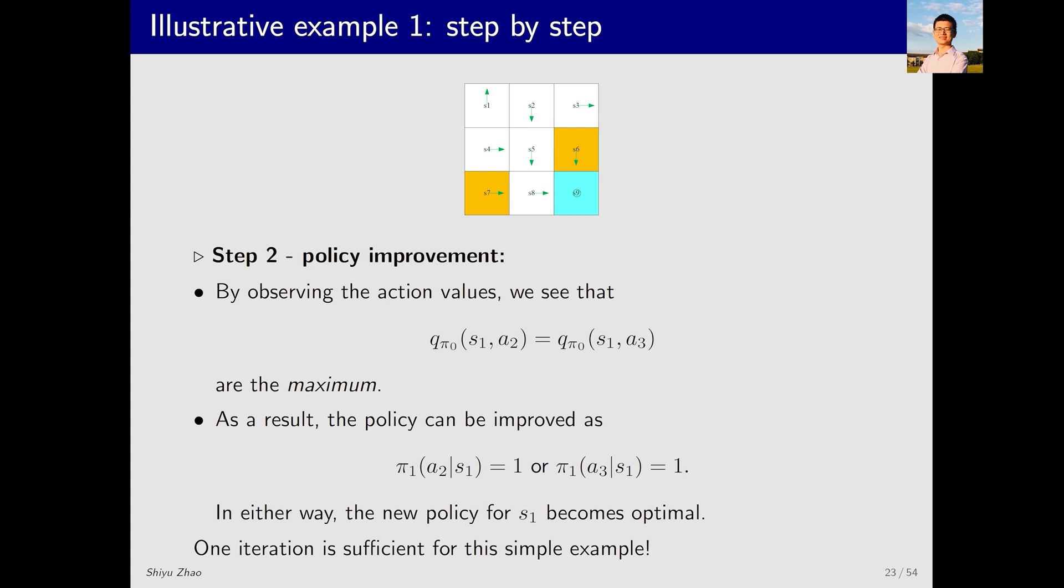After deriving Qπ, the next step is to conduct policy improvement. In essence, this involves comparing the action values to see which one is the largest. In this case, A2 and A3 are the largest. Intuitively, moving right or down appears to be the better actions because they both yield the same action value. Therefore, either A2 or A3 can be chosen to form a new policy. This new policy is already optimal.